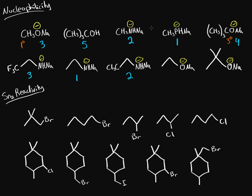Now comparing the two oxygens: one is connected to a primary carbon while the other is connected to a tertiary carbon. A tertiary carbon has three connections to other carbons, so it's going to be sterically hindered, making it harder for that reagent to attack the substrate. So ranking those two as four and five.